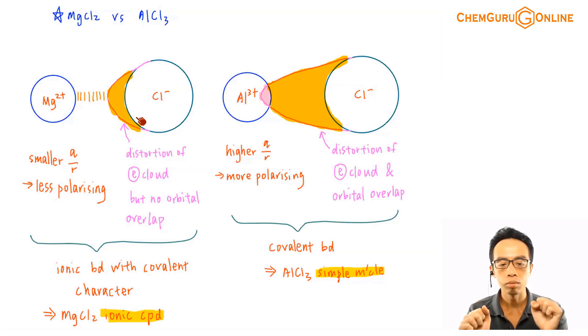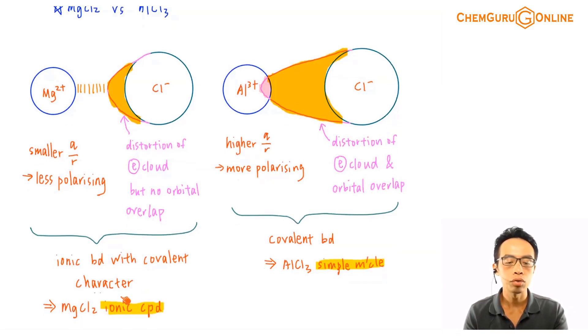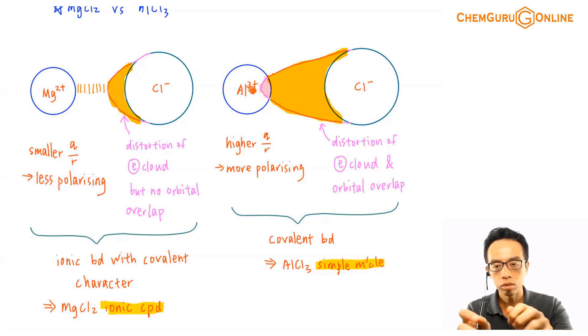So this is ionic bond with covalent character. So MgCl2 is still ionic, it is an ionic compound. Now AlCl3 has Al3+ with an even higher charge density, even more polarizing than Cl-. Pull electron cloud towards itself until there's orbital overlap between Al3+ and Cl-. So now this bond becomes a covalent bond. So AlCl3 is now officially counted as a simple covalent compound or a simple molecule.